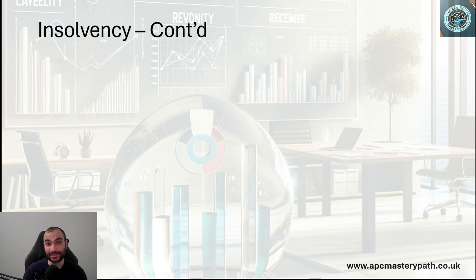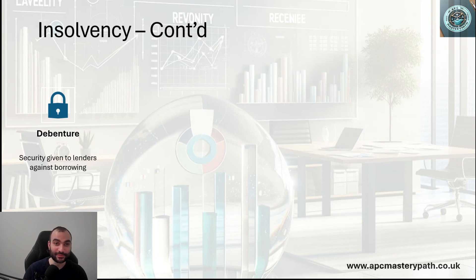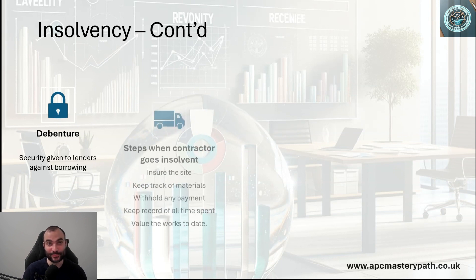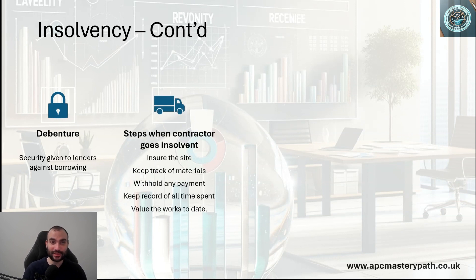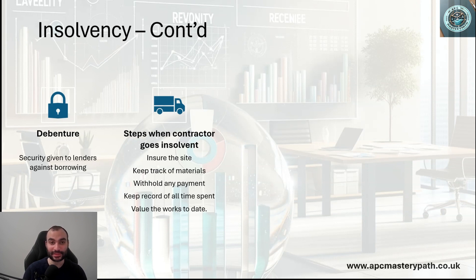There are some terms linked to insolvency worth discussing. A pension bond is a form of guarantee provided by the borrower to the lender to ensure that the borrower is going to be paying on time, giving the lender peace of mind. If a contractor goes bust, a QS should go on site, understand the value of works done to date, check if the site and materials are insured and of the correct type, size and specification. Documentation of actual work done to date and estimated completion should also be prepared to help the client plan.